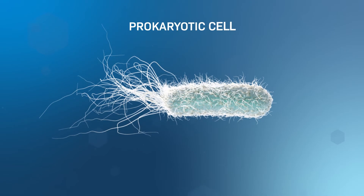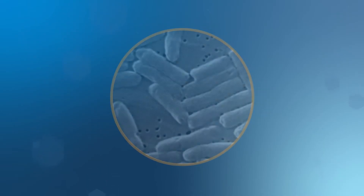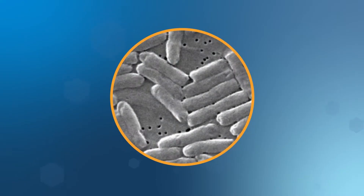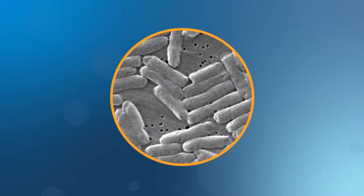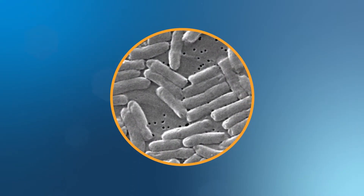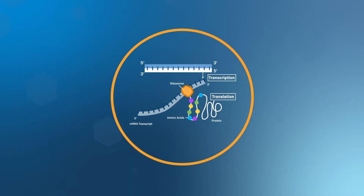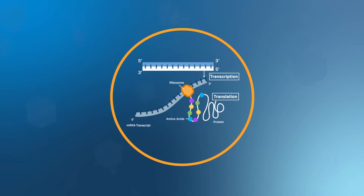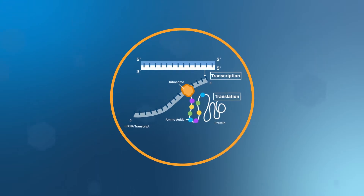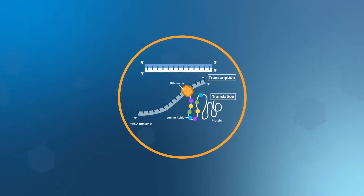Prokaryotic cells have fewer internal compartments and organizing structures than eukaryotic cells. Yet they still accomplish the basic functions of life, like passing on genetic information and creating proteins to respond to their environment.